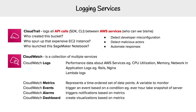Then you have CloudWatch Dashboards, which create visualizations based off of metrics. Earlier I mentioned that metrics you could think of as graphs — that's exactly what they are. You can take those graphs and put them onto a dashboard so you can represent a lot of data at a glance. Those are the two logging services in AWS.